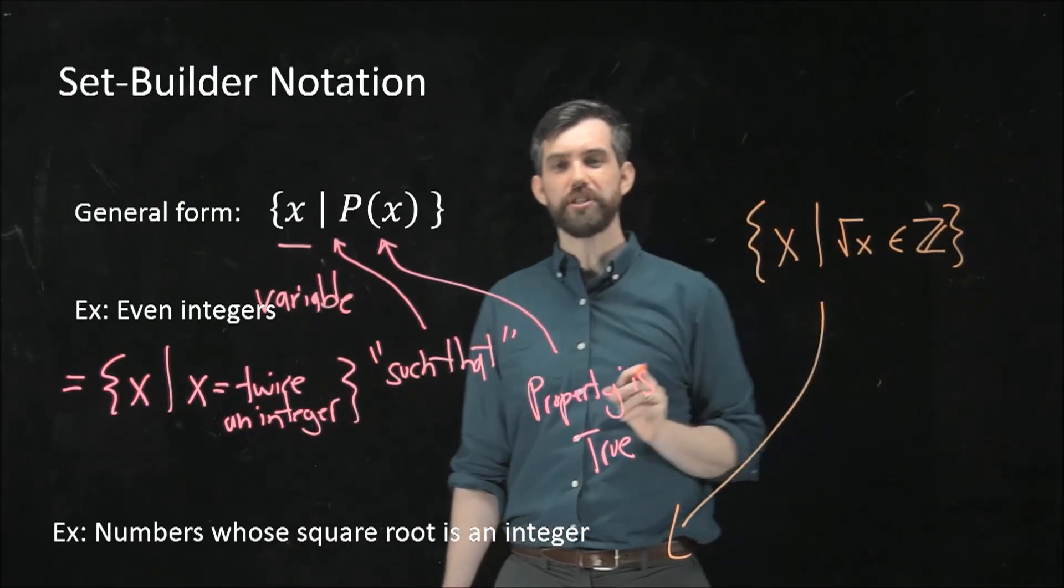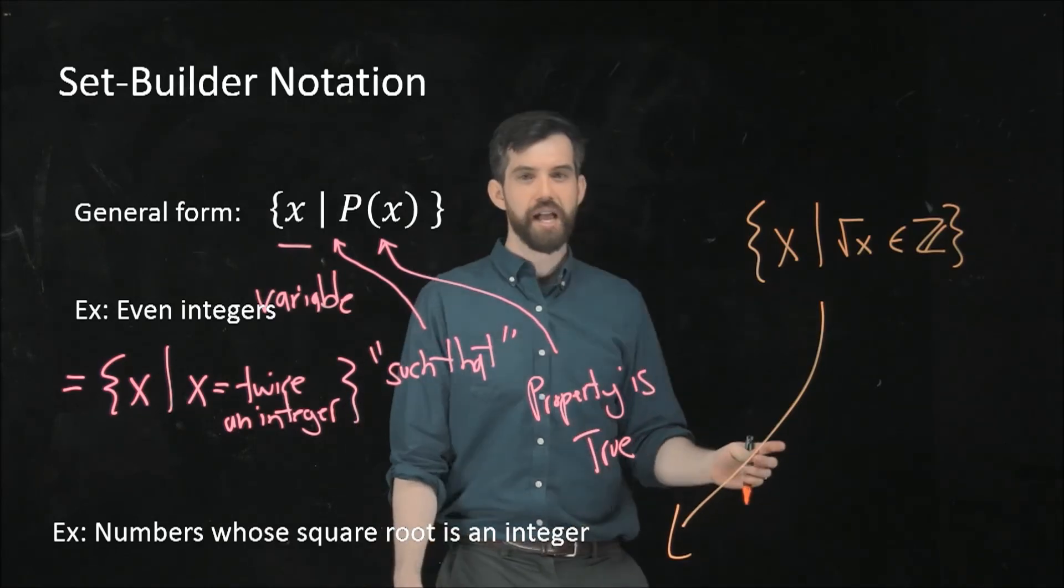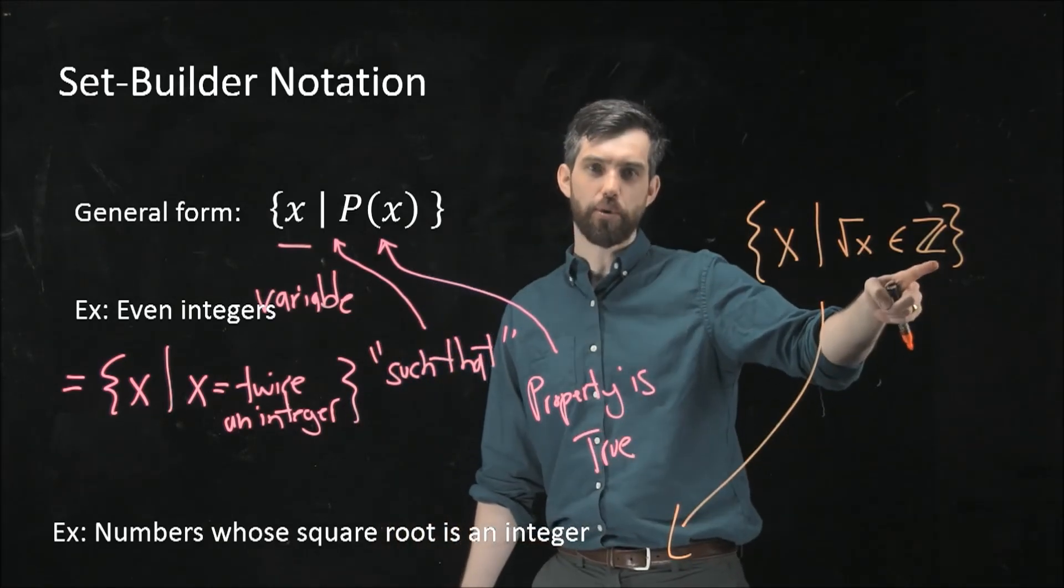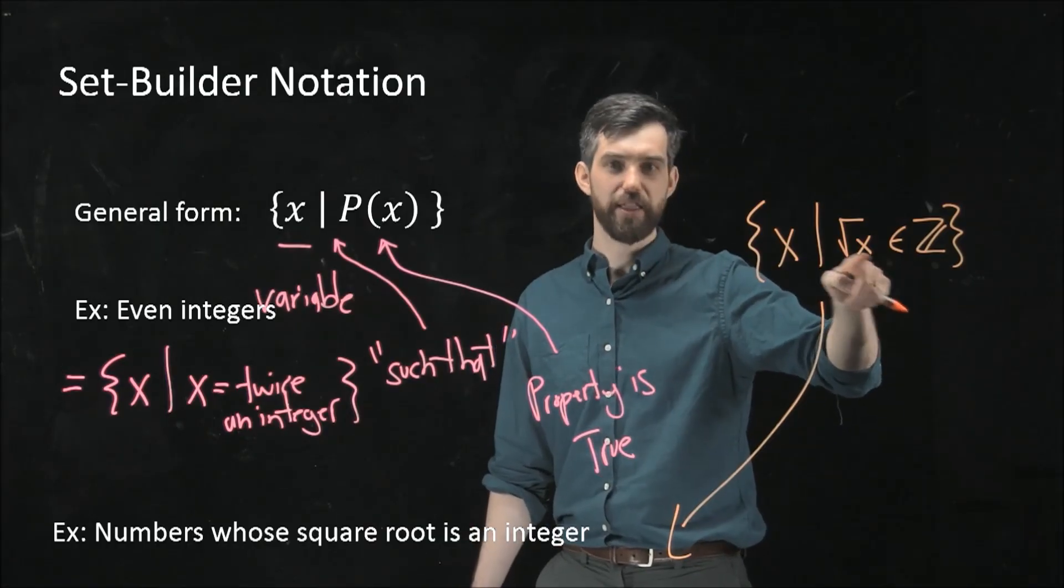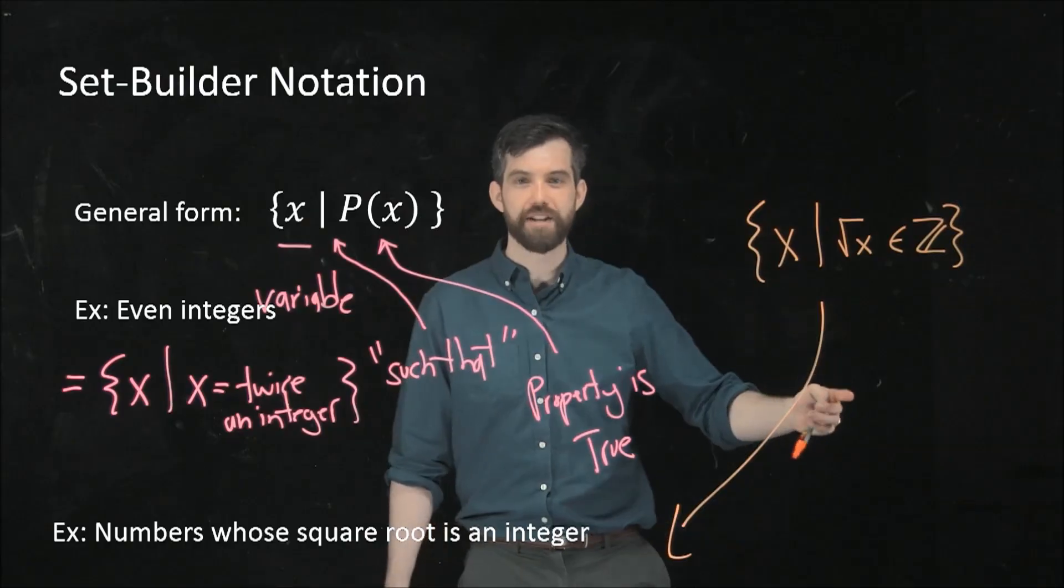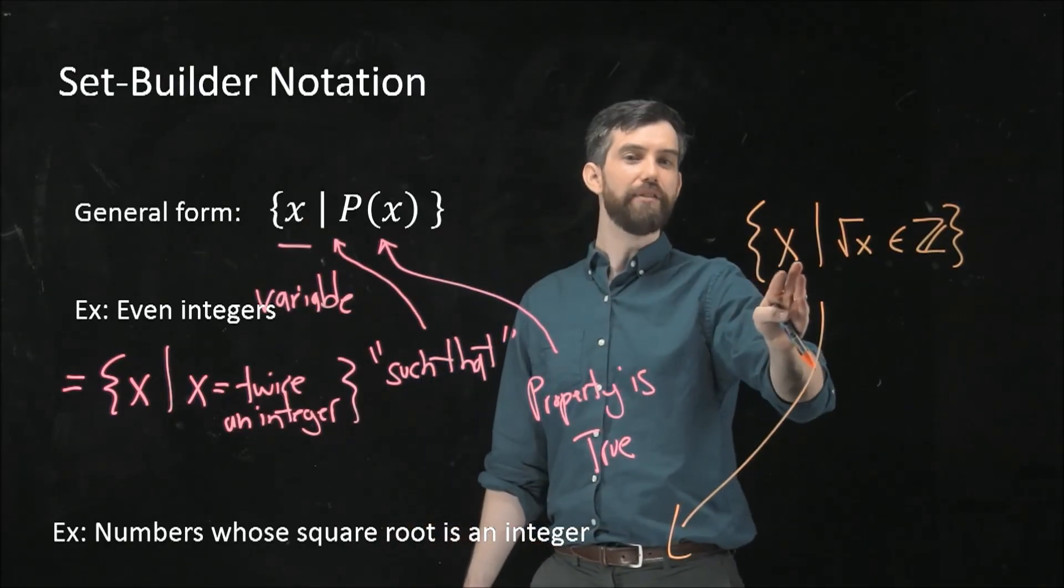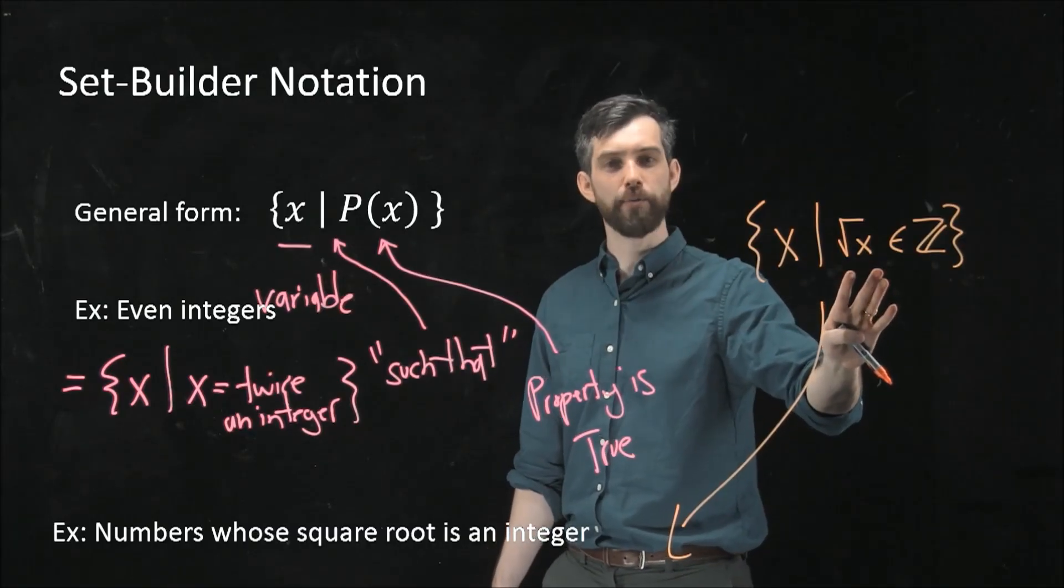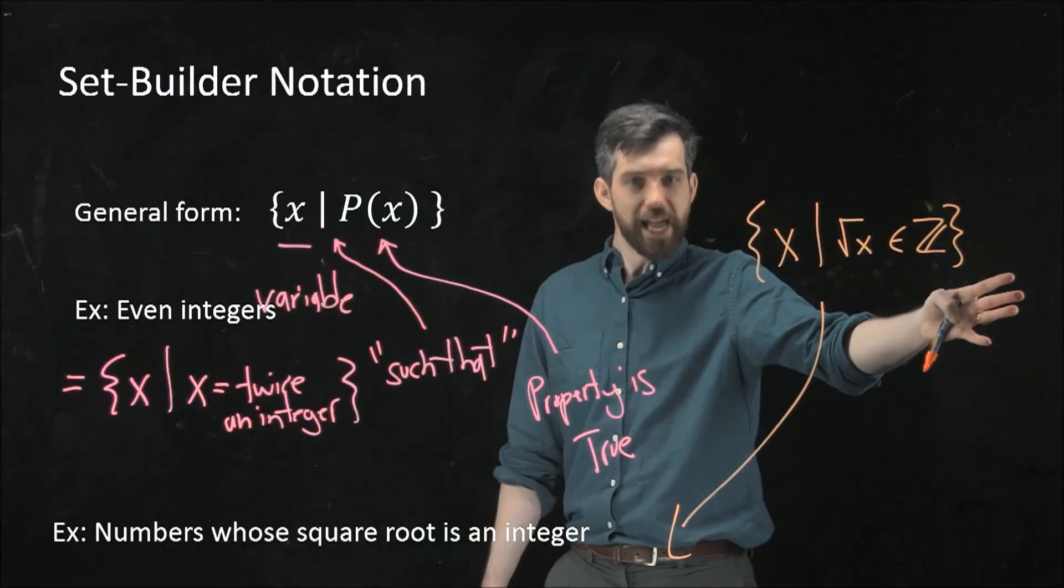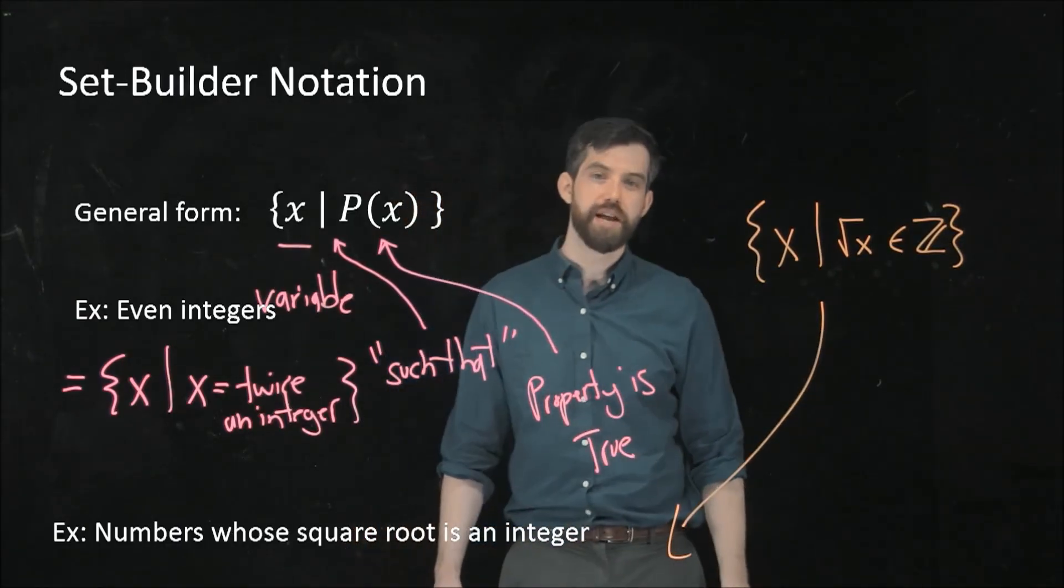So this is kind of an interesting mathematical expression because it's got a lot of our new terminology in here. The Z was our shorthand for the integers. This backwards E thing is our notation for element. The vertical line stood for such that. So if I read off this expression, this is the set of numbers such that their square root is an integer. And so I think this notation translates this set that I'm describing down here.